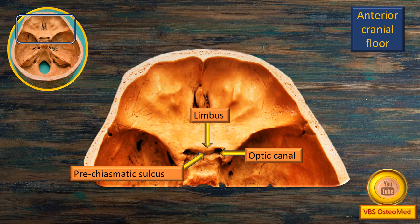Next, we will identify a few more details. The posterior border of the lesser wing of the sphenoid is a demarcation between the anterior and the middle cranial fossa. There is a flashing arrow — that is the optic canal, through which the optic nerve communicates with the orbital cavity. Connecting the two optic canals is a sulcus called the pre-chiasmatic sulcus. The anterior edge of this sulcus is known as the limbus of the sphenoid bone. Right behind the sulcus lies the optic chiasma — the junction where the two optic nerves meet in the midline.